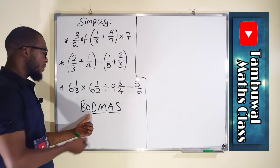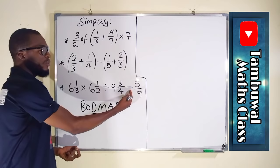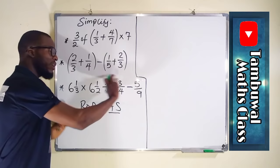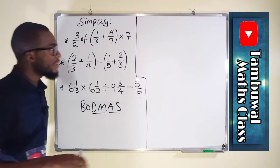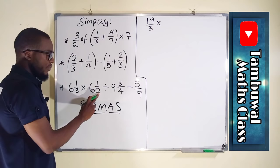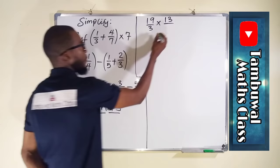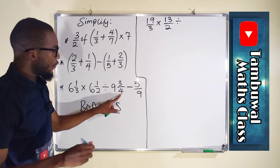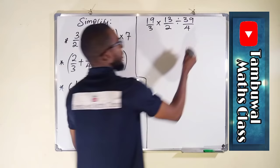We have multiplication and division, so we start with whichever comes first. We also have subtraction at the end. For convenience, let us first transform the mixed numbers into improper fractions. For the first: 3 times 6 is 18, plus 1 is 19, giving 19 over 3. For the second: 2 times 6 is 12, plus 1 is 13, giving 13 over 2. For the third: 4 times 9 is 36, plus 3 is 39, giving 39 over 4. The last term is minus 5 over 9.